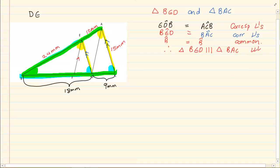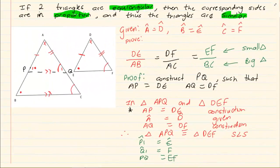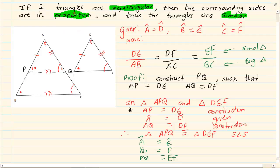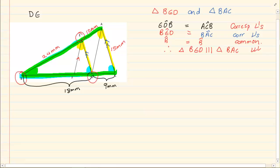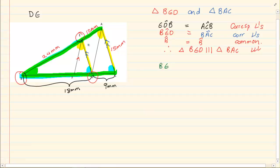Now how does this help us? Our theorem says if two triangles are equiangular then the corresponding sides are in proportion and thus the triangles are similar. So if the triangles are similar, they are in proportion, which means we have a reason to write down a ratio. What would our ratio be, keeping in mind which triangles we are using? From the small triangle the three sides are BE, ED, and BD. From the big triangle, working with the corresponding angles, with BE comes BA, with BD comes BC, and with ED comes AC.